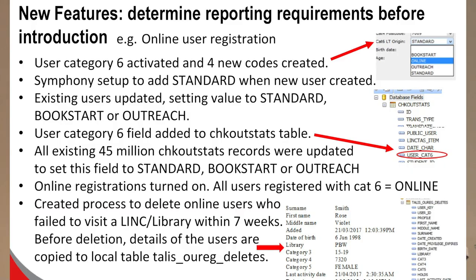We also decided to harvest from the history log files all the user logins to eResources and to NetLoan, our PC booking software. The information is extracted and enhanced with all the statistical categories and when users were added to the database — both of these are quite old users added in GIAC, our previous system. The connection field tells you what they were logging into: the top one is OverDrive, and the other is NetLoan, the PC booking software. So you can analyse what eResources users are logging into, but more importantly, their profile.